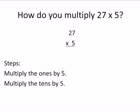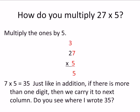How do you multiply 27 times 5? We're going to multiply the 1's by 5 and the 10's by 5. There are the 1's in red. 7 times 5 is 35. We can't write that in the 1's place — we write the 5 in the 1's place, and just like in addition, if there's more than one digit then we carry it to the next column.